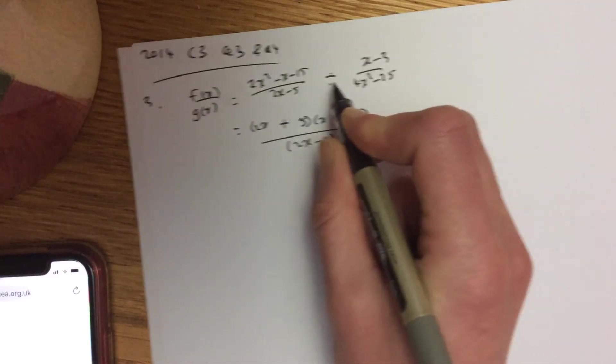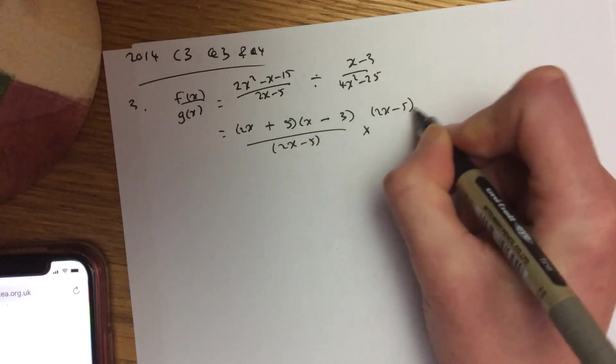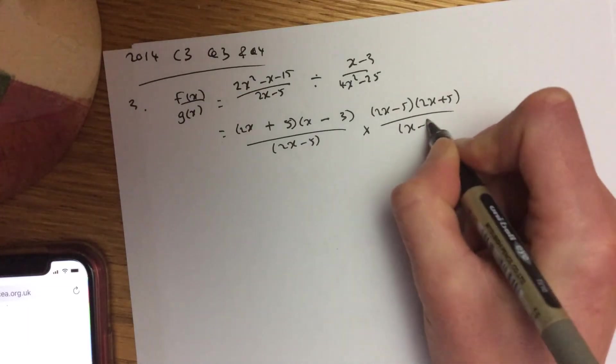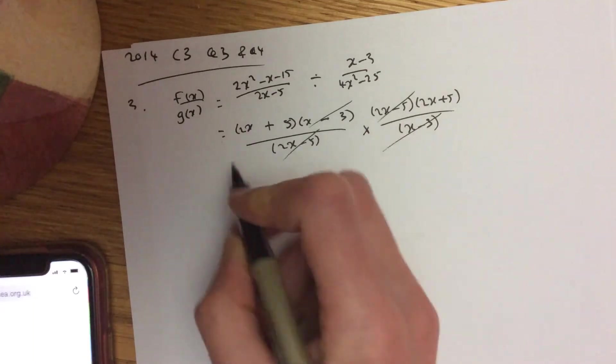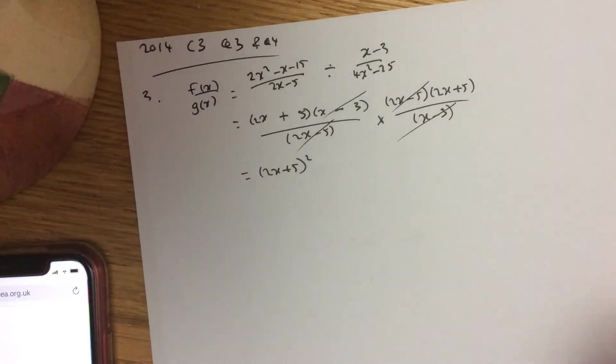Now I'm going to do this all in one go, so I'm going to turn this upside down and multiply. That's a difference of two squares. So 2x minus 5, 2x plus 5 all over x minus 3. That cancels there, and those two cancel. You can use 2x add 5 twice. So we can just put it as a squared in there.